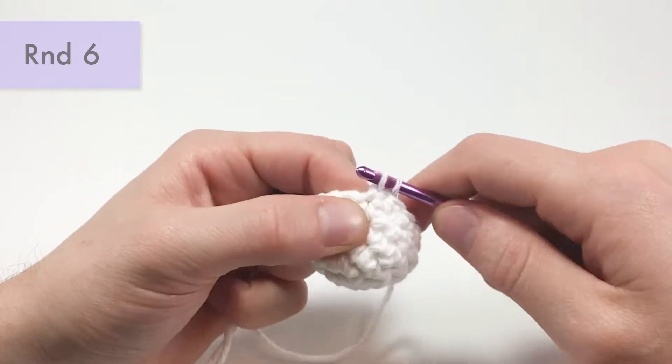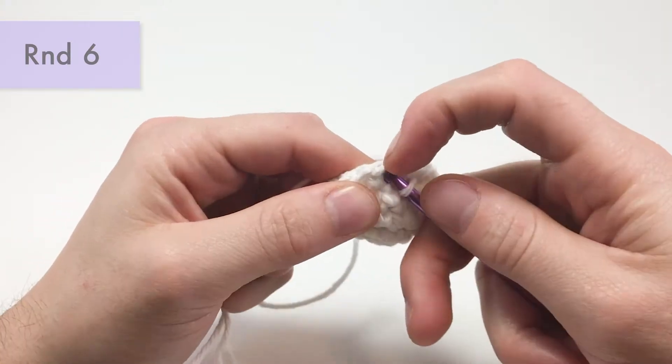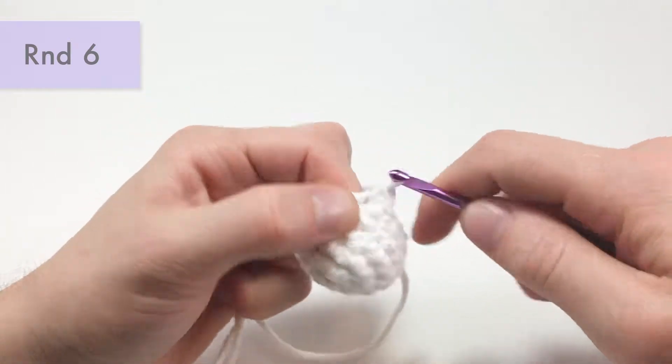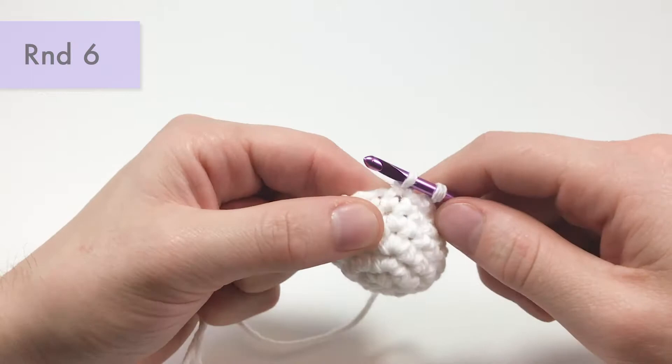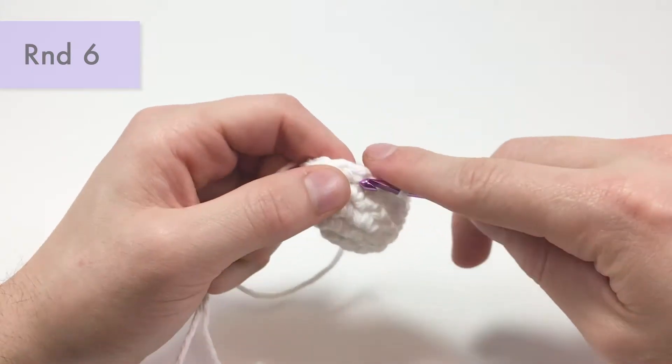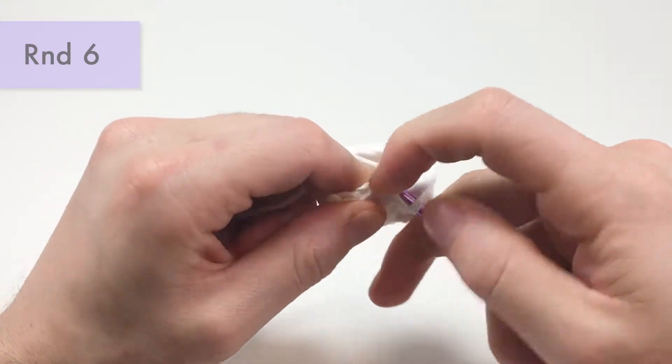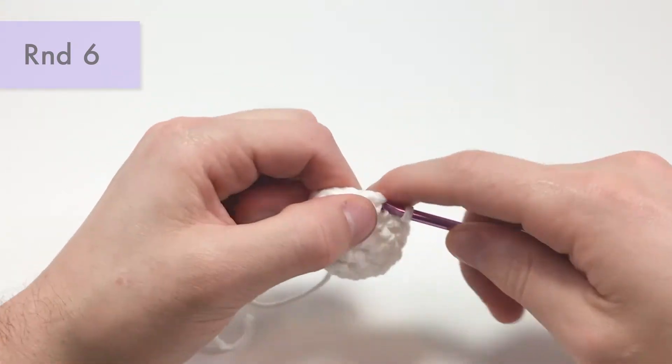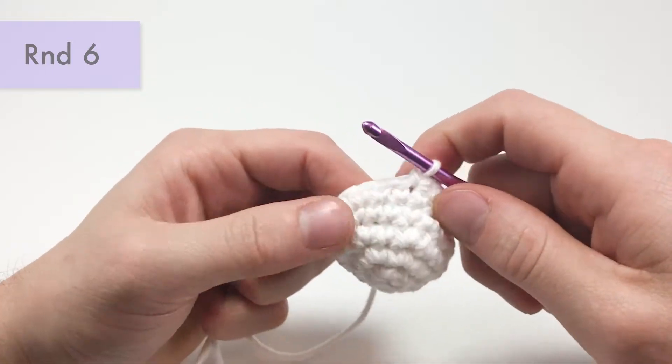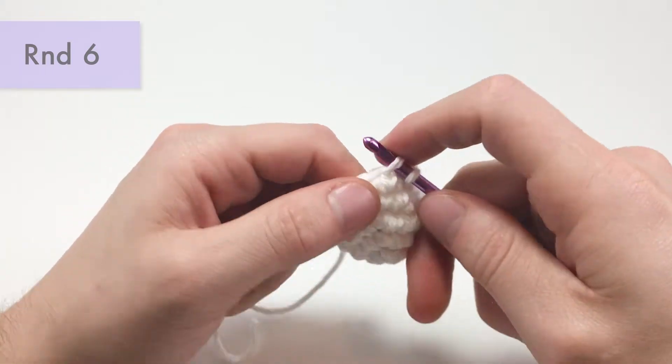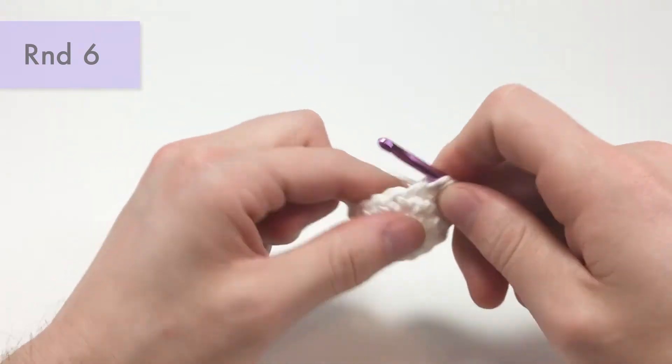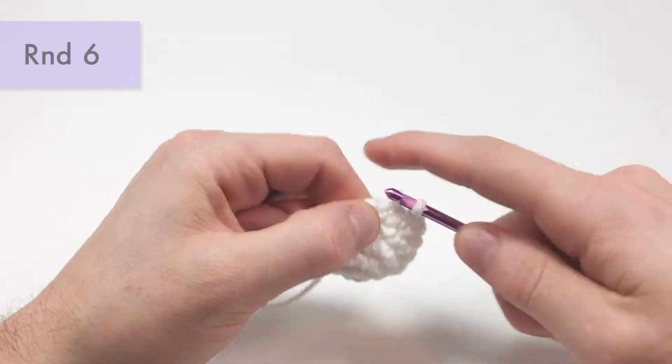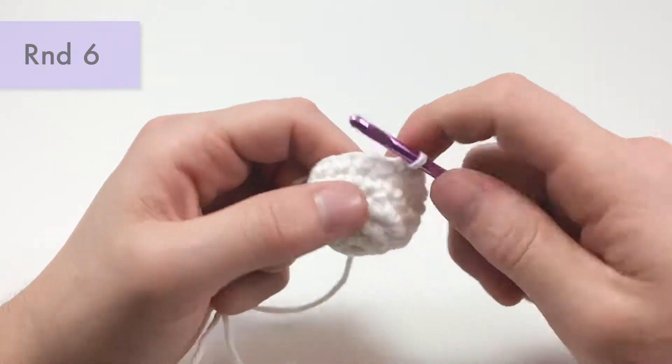And invisible decreases are really useful when you're making amigurumi because, like the name suggests, they're invisible. You can't really see them very much. I like to use them pretty much any time I want to decrease slightly. So I use them a lot more often than I use single crochet two together, for example, because that's not really, it pretty much does the same thing, but is more noticeable.